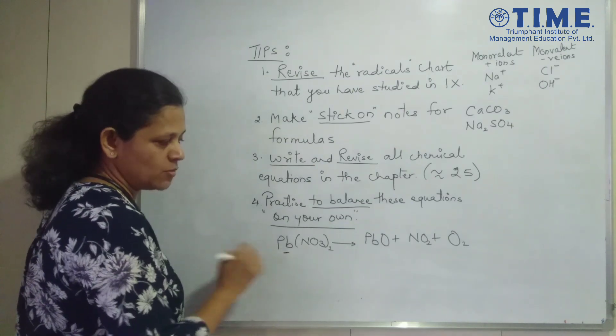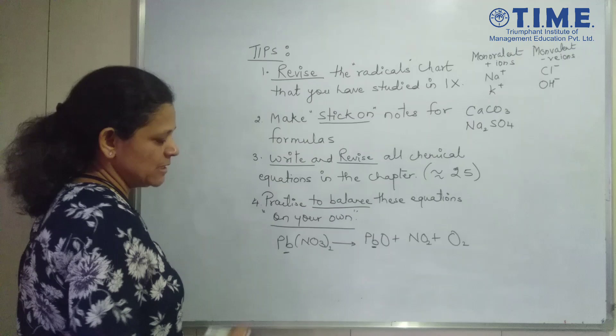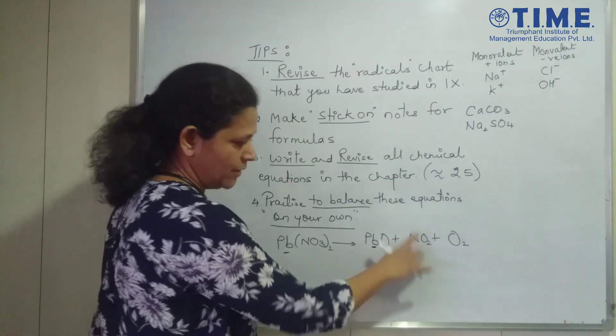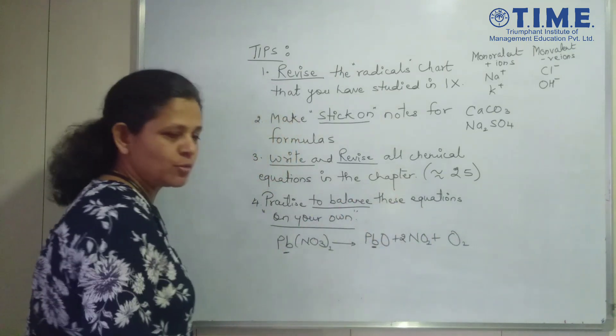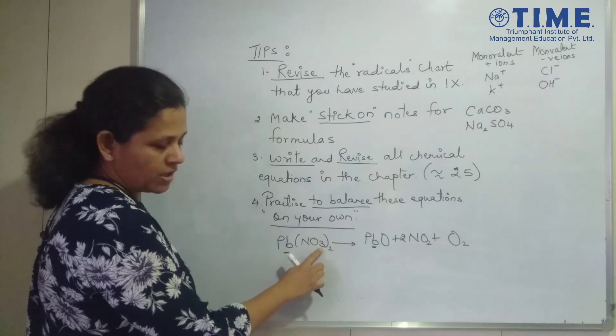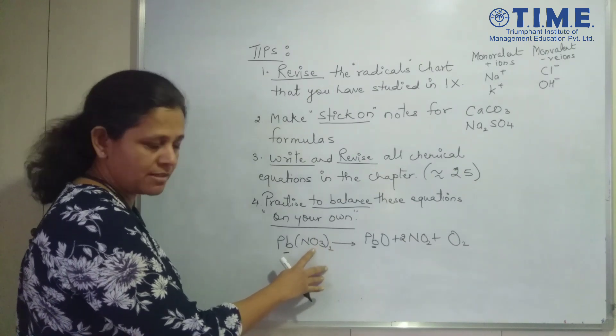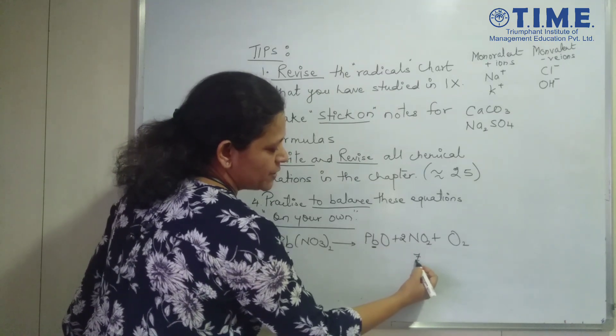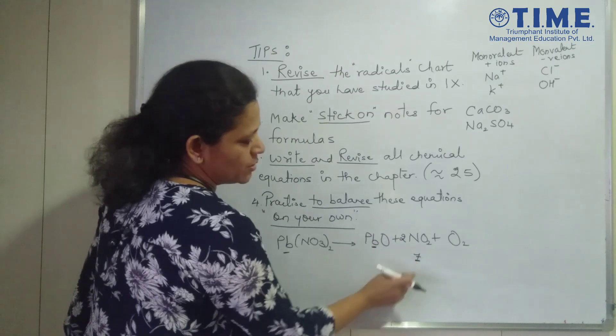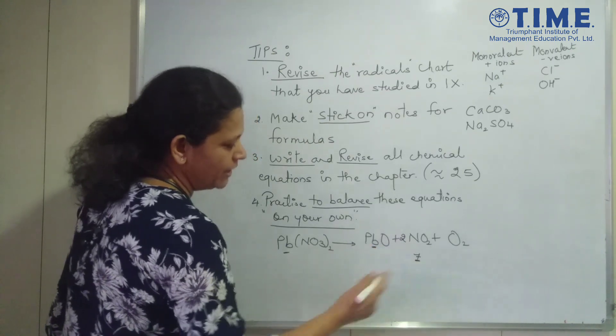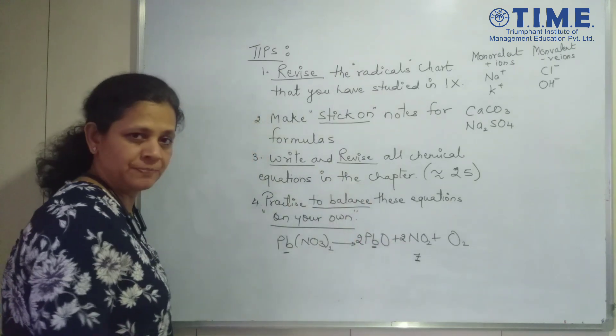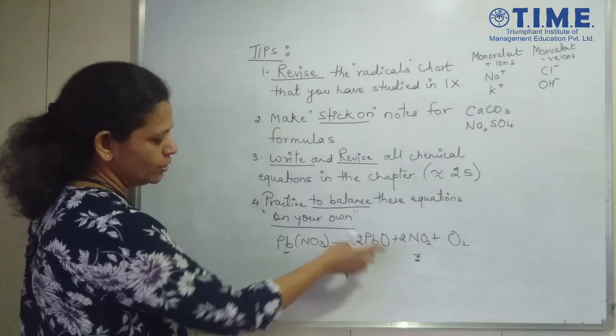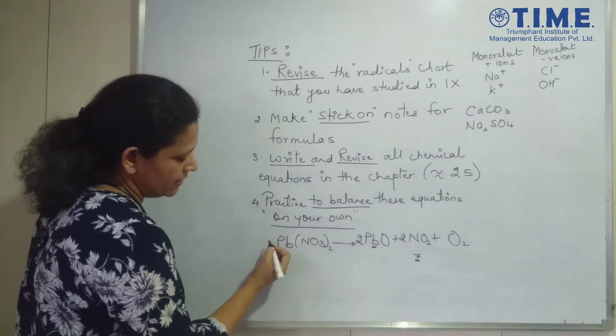So you need to balance this on your own. You start with lead. There is one atom here, one atom here. So lead is balanced. Nitrogen, there are two atoms. What you see here is only one atom. So the first thing that you do is try to balance the nitrogen. Then go to oxygen. There are three to six oxygens here. But here you see one, four and two. There are total of seven oxygens. So what we do is we turn this odd oxygen to even by putting two here. Now this makes lead two atoms.